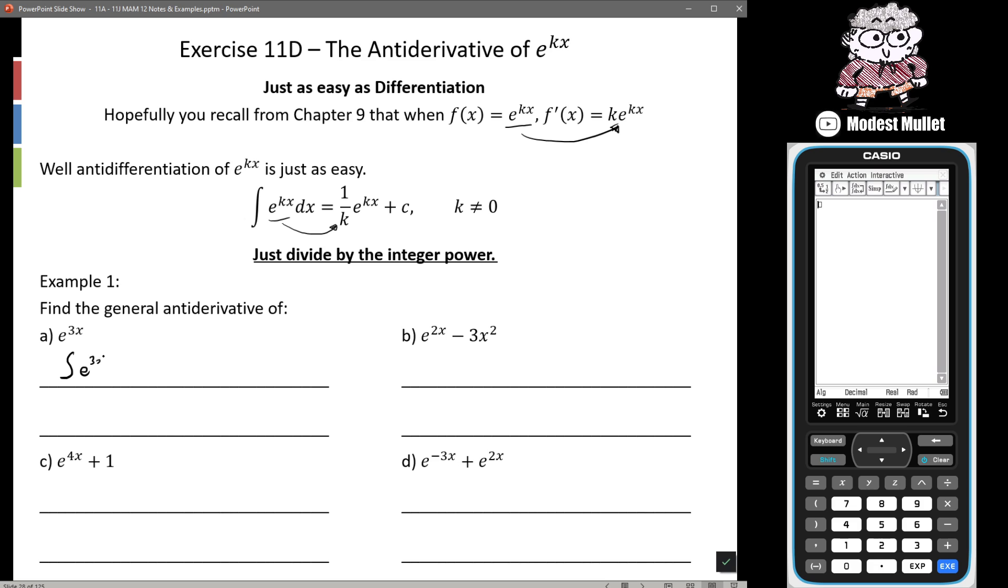So we're finding the general anti-derivative of e to the 3x, so that's going to be equal to e to the 3x and then we can either write it as one third or we could also just write it e to the x on three and then we have plus c as always. We cannot be forgetting that.